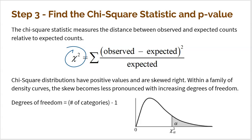In the numerator, we take the observed value minus the expected value — for example, observed blue eyes minus expected blue eyes. We square that number, then divide by the expected count to keep it relative to expected. That symbol in front is the summation symbol, so we apply this formula to every single category — blue eyes, green eyes, hazel, brown eyes, and so forth — and then add them all together.